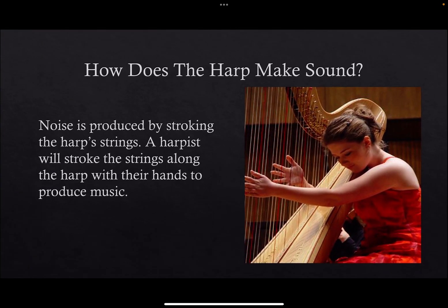How does a harp make sound? Noise is produced by stroking the harp strings. A harpist will stroke the strings along the harp with their hands to produce music. Here is an example of a woman using her hands to play the harp.